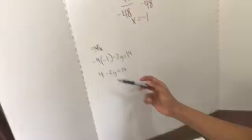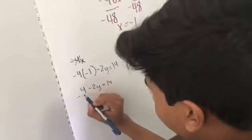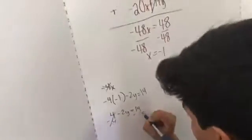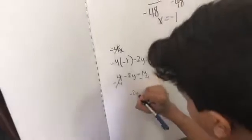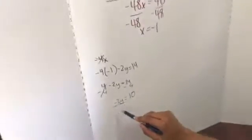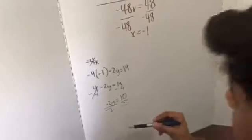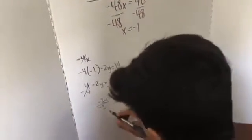So you get y by itself. So basically, now what we do is we try to isolate the y variable. So we subtract 4, since this is positive, from both sides of the equation. And now we get negative 2y equals 10. And so now we have to divide both sides by negative 2 to completely isolate the y variable. And a positive divided by negative is a negative.